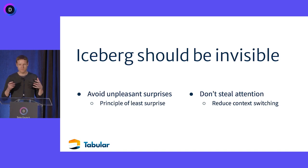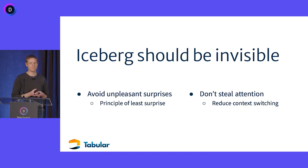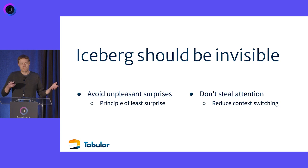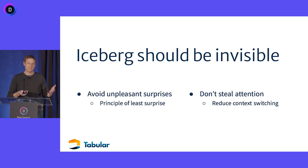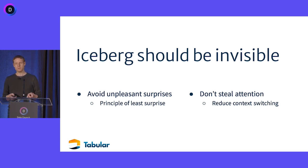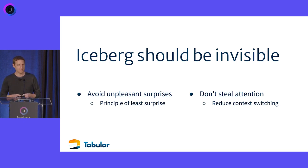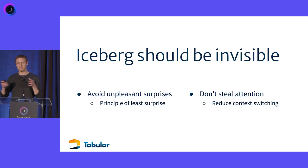Iceberg has this philosophical principle that it should be invisible, and that comes out in two ways. First, we don't want unpleasant surprises — things like making a simple change to your table and corrupting all your data for all time. Second, and more subtle, we don't want to steal people's attention. That's really where we've failed in the last 10 years — making people care deeply about things like file layouts, table capabilities, and how large a table will be in three years when you're just trying to get everything up and running.